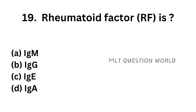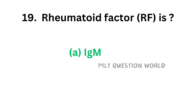Question number 19. Rheumatoid factor is: Option A, IgM; Option B, IgG; Option C, IgE; Option D, IgA. The correct answer is Option A, IgM. Rheumatoid factor comes under IgM.